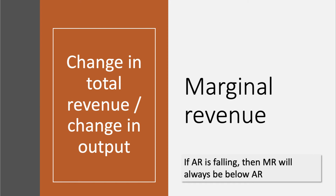Marginal Revenue, MR, is the change in Total Revenue divided by the change in Output. Now if the average revenue is falling — if the demand curve is downward sloping — the marginal revenue will always be below the average revenue and with a steeper gradient.